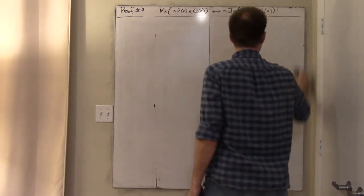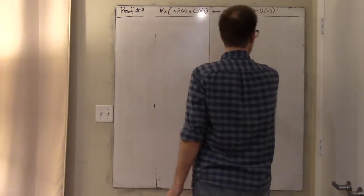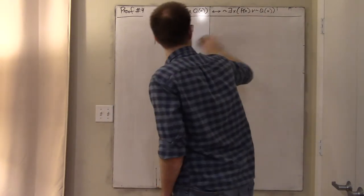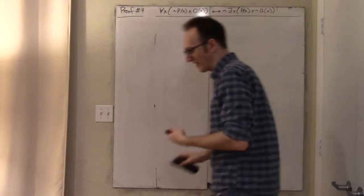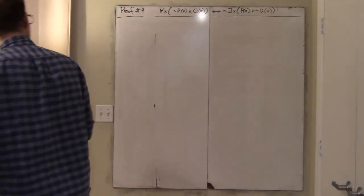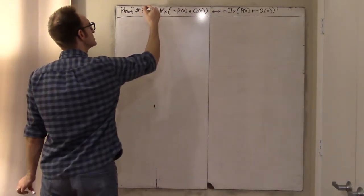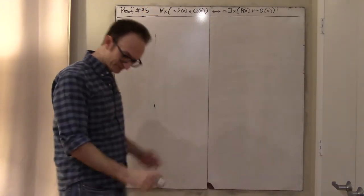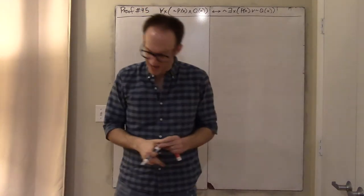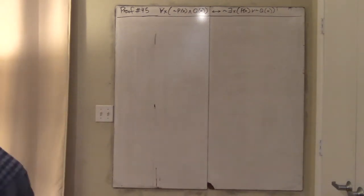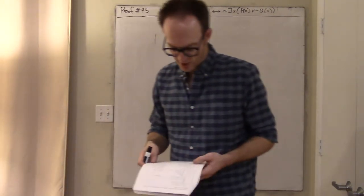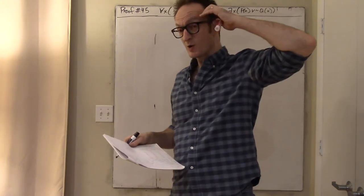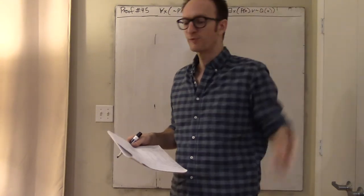The very next proof, 46, is slightly harder, but it's just 45 over again with some extra junk thrown in. If you factor in novelty, it is not harder. If you caught proof 45 all by yourself, I'm extremely impressed. It assumes that you are kind of an expert on proof 42.